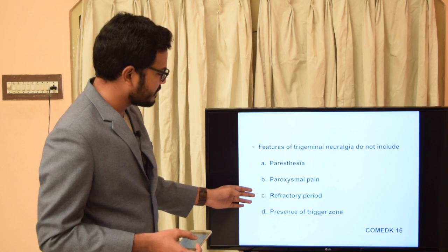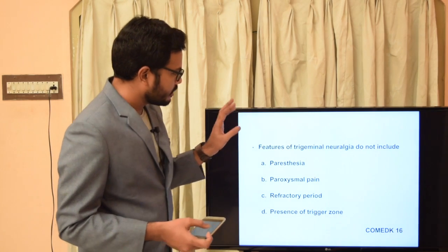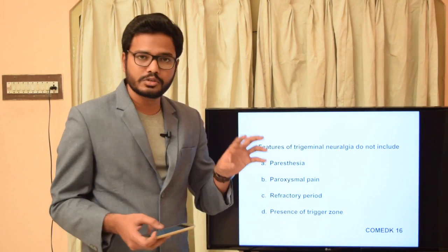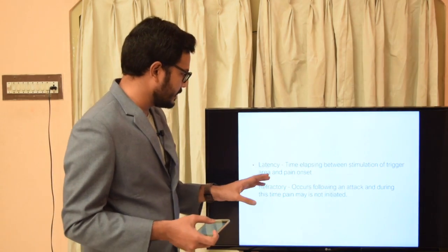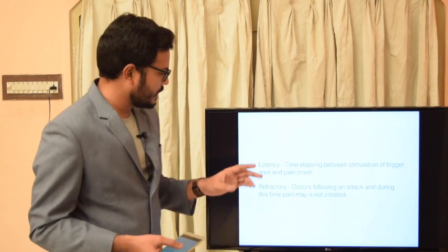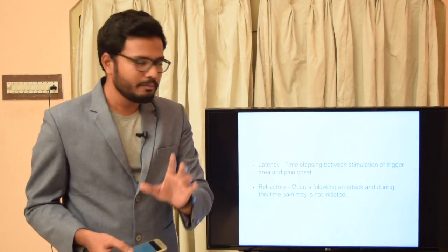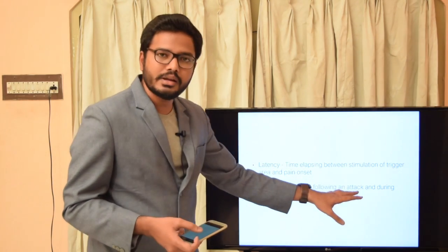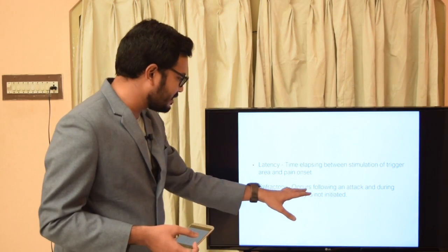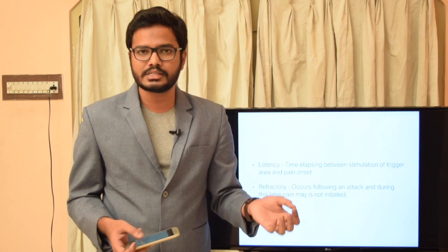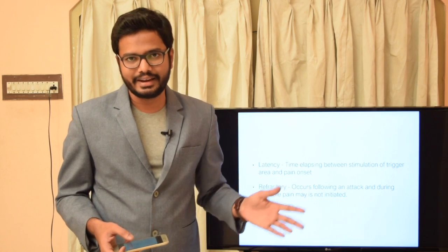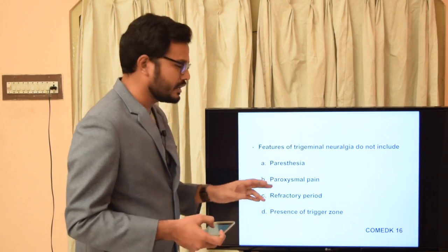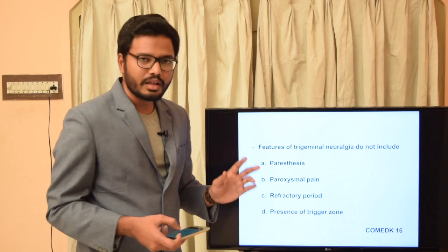MCQ: Features of trigeminal neuralgia do NOT include: paresthesia, paroxysmal pain, refractory period, or presence of trigger zone. The answer is paresthesia — there is no paresthesia in trigeminal neuralgia. Paroxysmal pain, trigger zones, and refractory period are all features. The latency period is time between trigger stimulation and pain onset; the refractory period follows an attack, during which no further attack can be initiated regardless of stimulation.